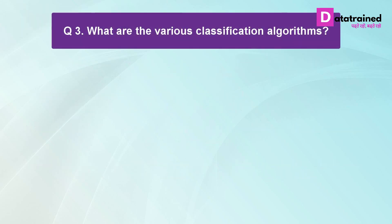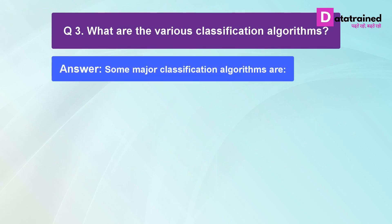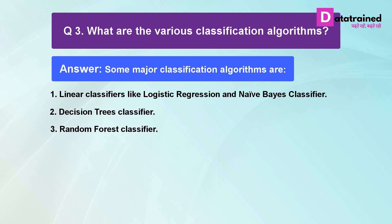What are the various classification algorithms? Some major classification algorithms are linear classifiers like logistic regression and naive Bayes classifier, decision tree classifier, random forest classifier, support vector machines, kernel estimation, neural networks, and K nearest neighbor.